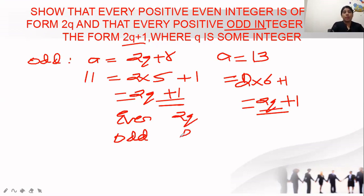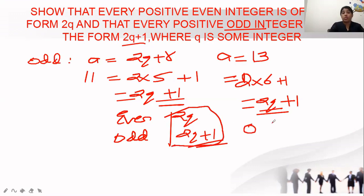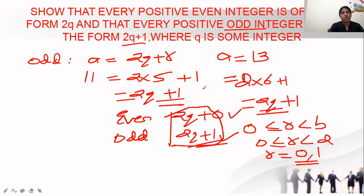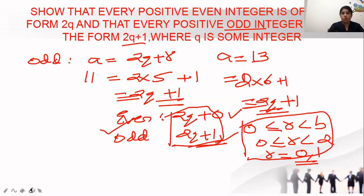To confirm further: we know 0 ≤ r < b, and our b is 2. So the remainder must be less than 2, meaning it can only be 0 or 1. When the remainder is 0, we get the form 2q; when the remainder is 1, we get 2q plus 1. This cross-check confirms the result. Conclusion: even integers are of the form 2q and odd integers are of the form 2q plus 1.